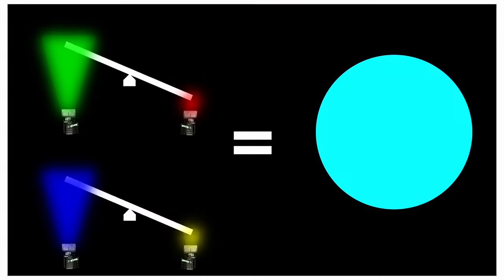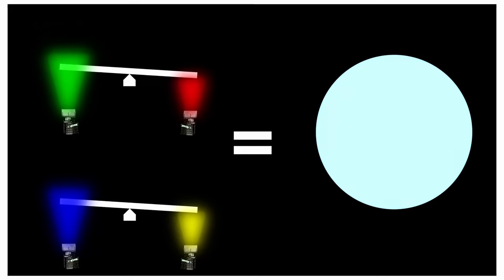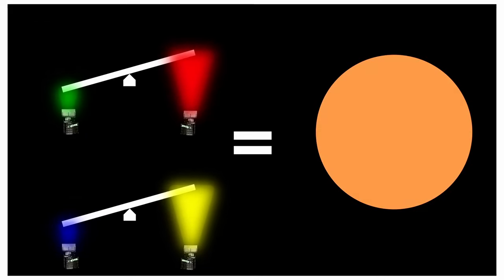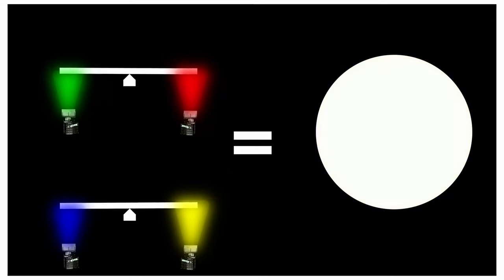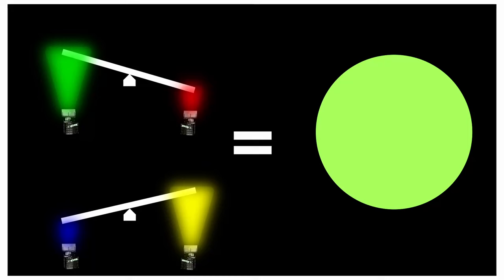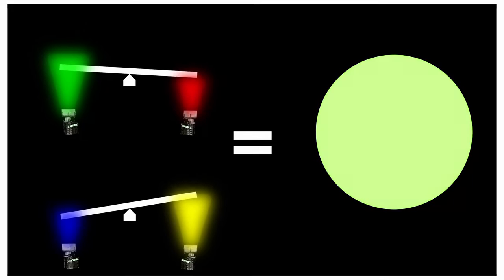We learned that human color vision consists of two color channels, the yellow-blue channel and a red-green channel. But there is another channel, the luminance channel. Brightness, you see, no pun intended, affects color too.